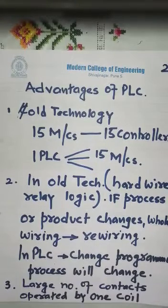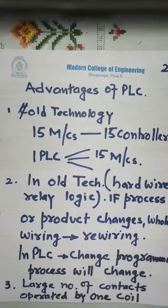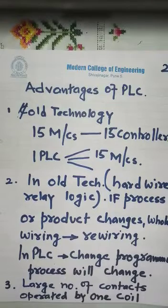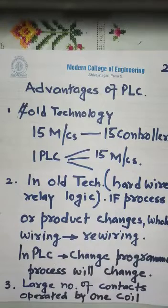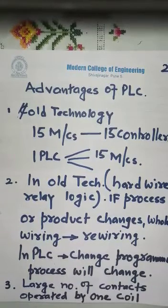In old technology, automation was started by Ford Motors in the assembly line of their four-wheelers. They developed automation using hardwired relay logic — a lot of wires, relays, cams, and switches. If the product nature or vehicle model changed, the whole wiring had to be redone, which took a lot of time. But in the present time, using PLC, if the nature of the product or operation changes, you just make a few changes in the program.